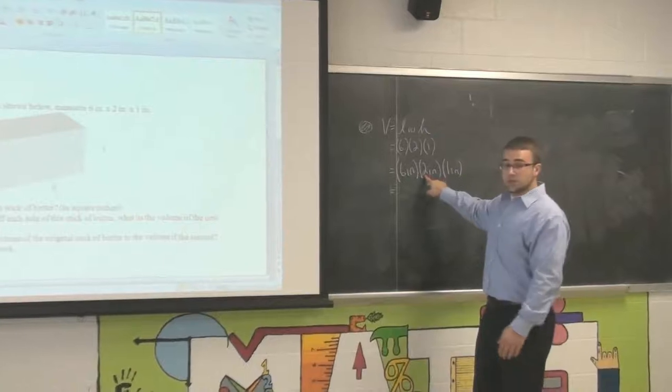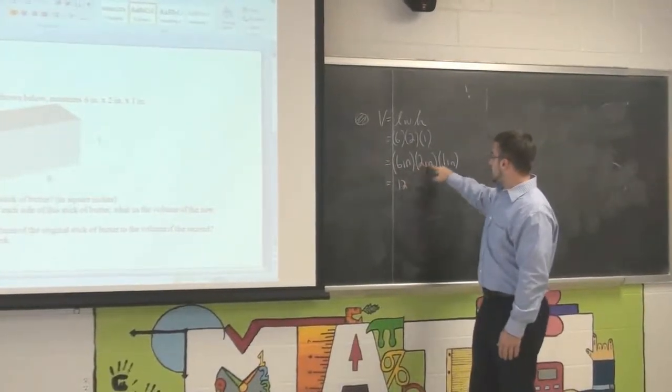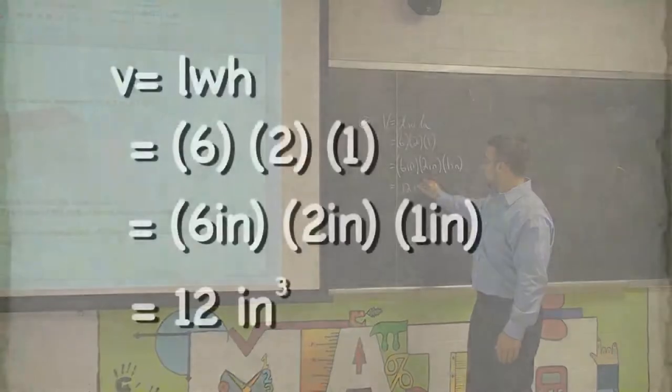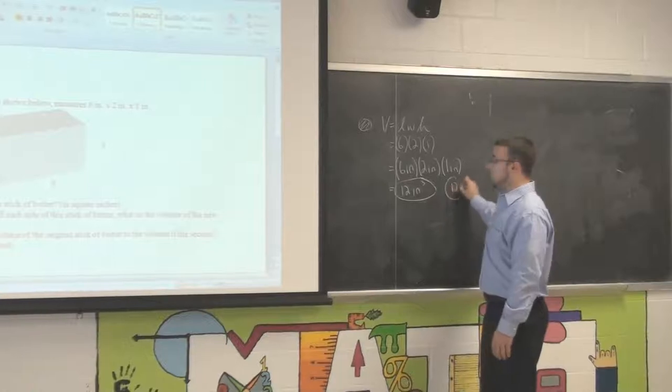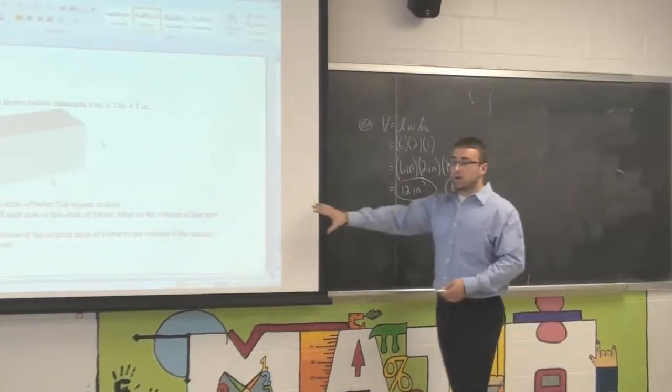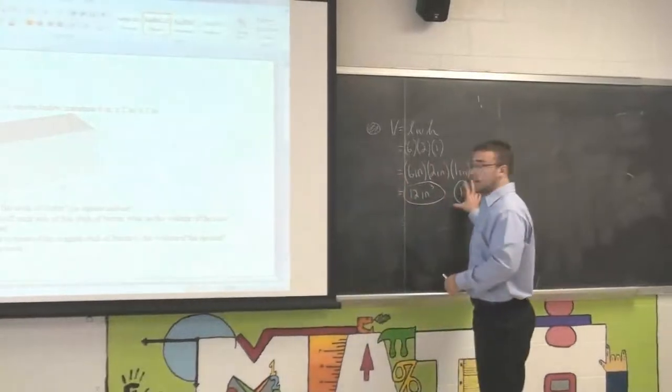Simple multiplying, six times two is twelve, twelve times one is twelve, and we have inches times inches times inches, which is cubic inches. This is your correct answer. It would not be correct if you merely had twelve there. Twelve what? Especially when we're talking about open-ended problems, we're talking about real life scenarios. We want to make sure that we have the correct units in there.